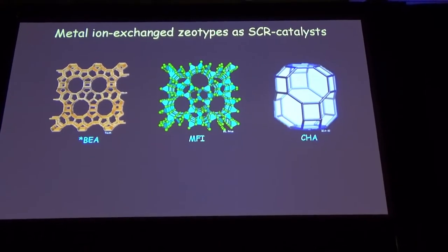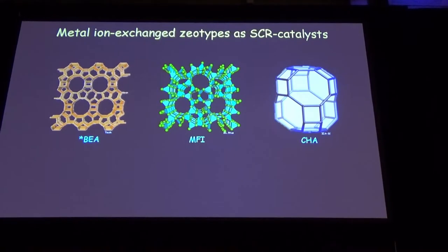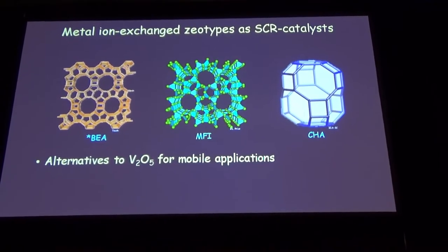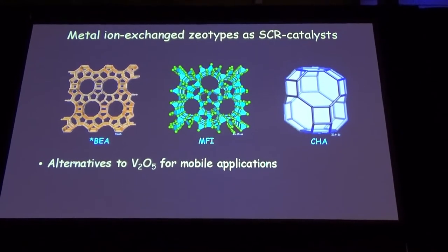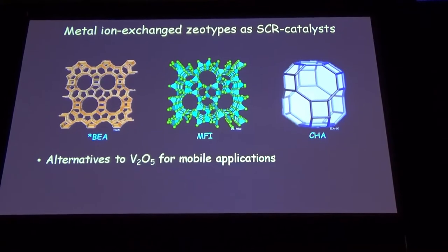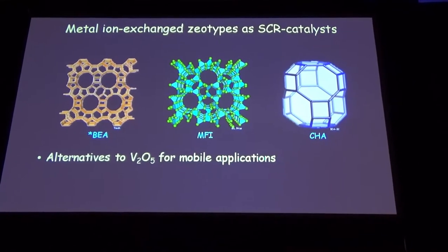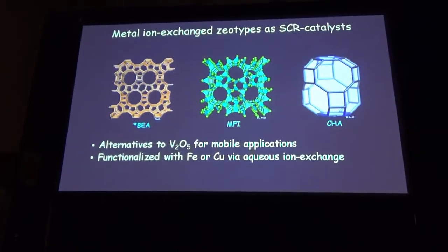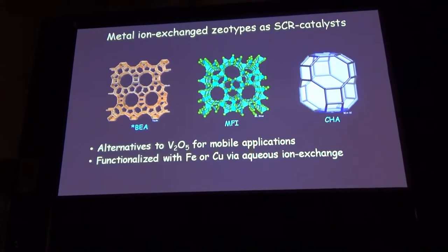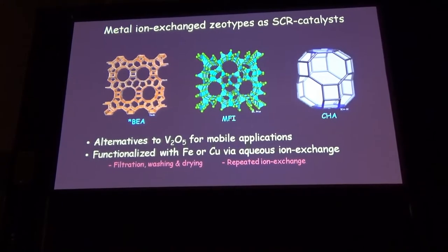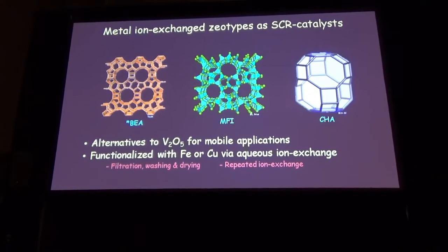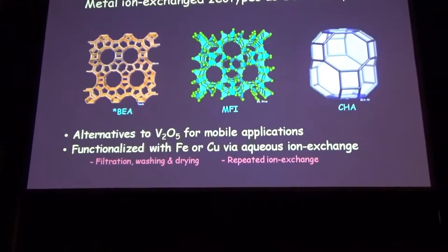These structures can be used as catalysts, especially for SCR. They can be alternatives to vanadium-based SCR catalysts, especially for mobile applications. Stability and low-temperature activity are important issues to consider. Usually these structures are functionalized with metal catalysts—most importantly iron, and even better copper—via aqueous ion exchange, where you add a copper-containing aqueous solution and perform an ion exchange. This requires filtration, washing, and drying steps, and for higher metal loadings you must repeat this several times.